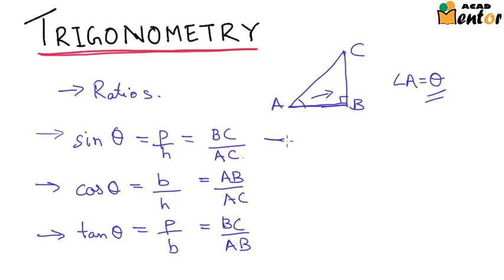Now let's write the ratios which can be found out by inverting these. On inverting sine theta we have cosec theta which was equal to hypotenuse by perpendicular and hence is equal to AC by BC.